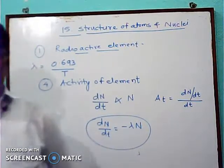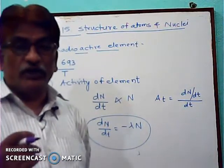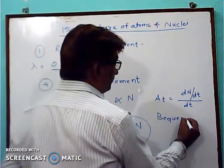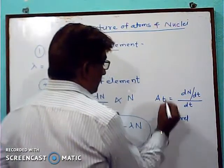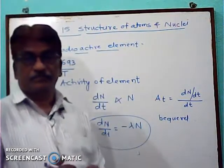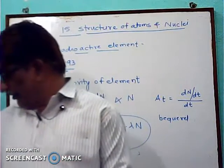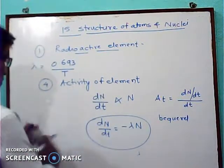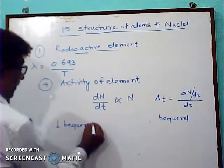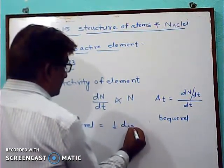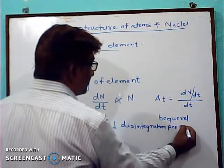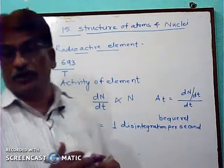The activity has a unit. The unit of activity is Becquerel, named after the scientist Becquerel who studied radioactive elements. One Becquerel is equal to one disintegration per second.